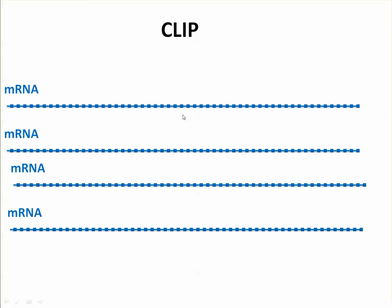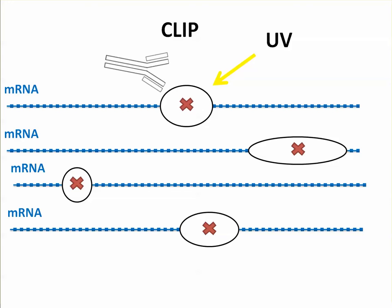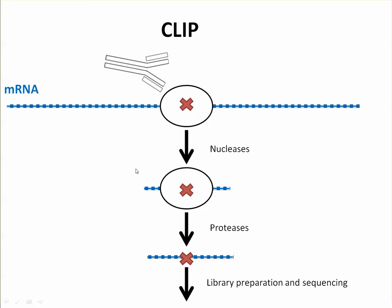PAR-CLIP is similar to an older technique known as CLIP. In this diagram we are inside the cell. Here are some mRNAs floating around and here are some proteins which are bound to them. In CLIP you use a harsh UV treatment to irradiate the cell. Any proteins bound to RNAs will get cross-linked. You add your antibody to the protein of interest, pull it down, add nucleases to chop back the RNA, add proteases to remove the protein, and then you go on to library preparation and sequencing.